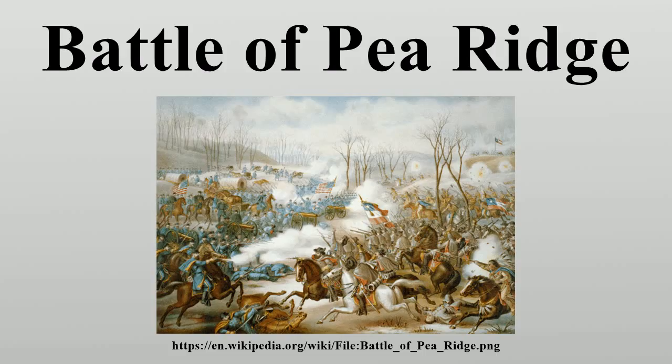United States forces in Missouri during the latter part of 1861 and early 1862 had pushed the Missouri State Guard under Major General Sterling Price out of the state. By spring 1862, Federal Brigadier General Samuel Curtis determined to pursue the Confederates into Arkansas with his Army of the Southwest.